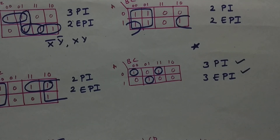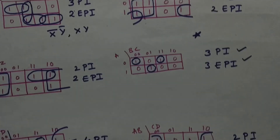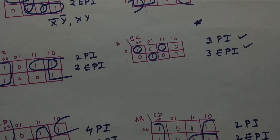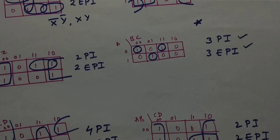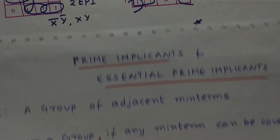I hope you have understood what is meant by prime implicants and essential prime implicants after doing these many examples. If you want more clarity, please solve more examples. If you have any doubts, please comment down below and I will answer within 24 hours. Please do subscribe — it will help me produce more good valuable content for you. Thanks for watching, and please do like, share, and subscribe.